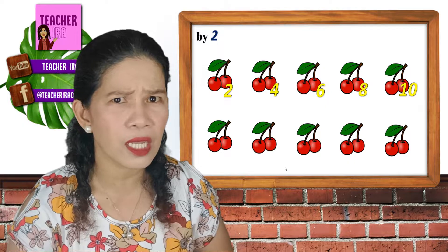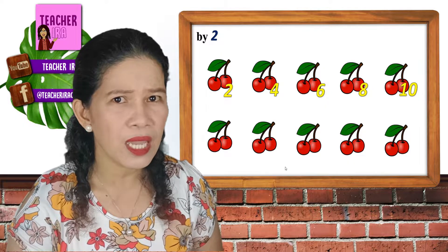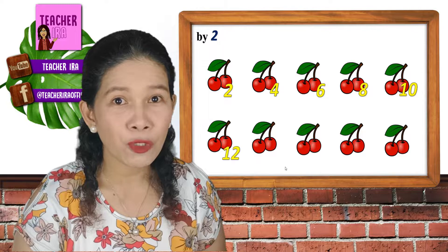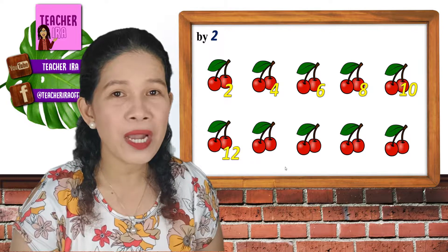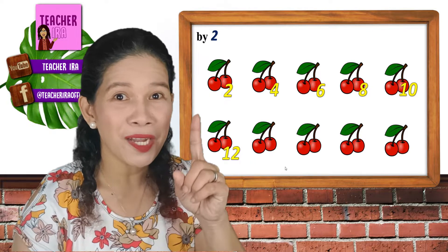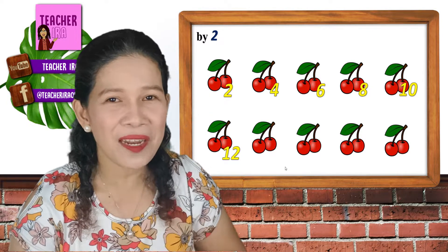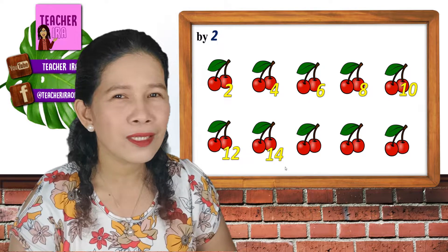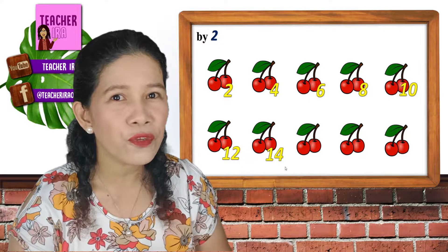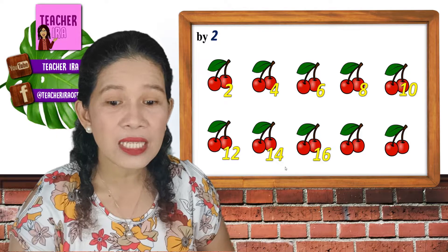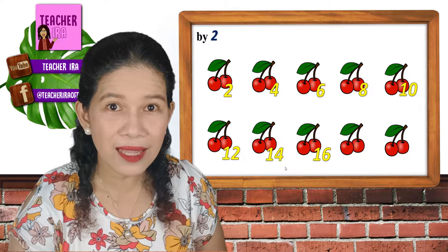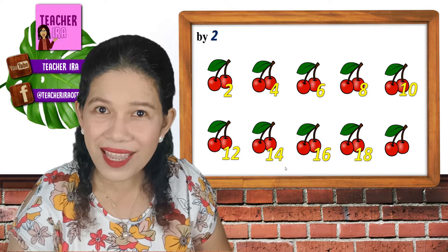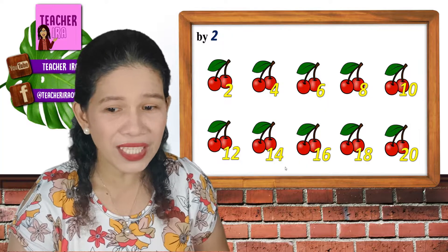10. It's supposed to be 12. I will not say the 13, but I will say 14. Instead of saying 15, I will skip it and I will say 16, 18, and 20.